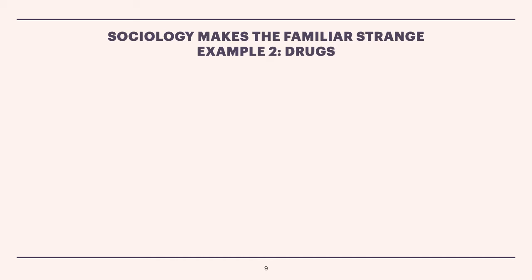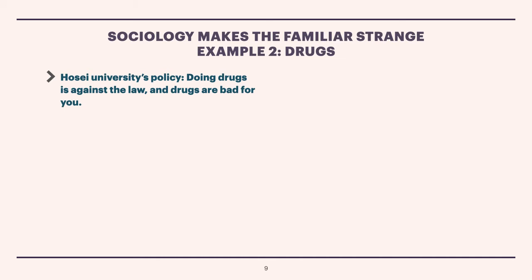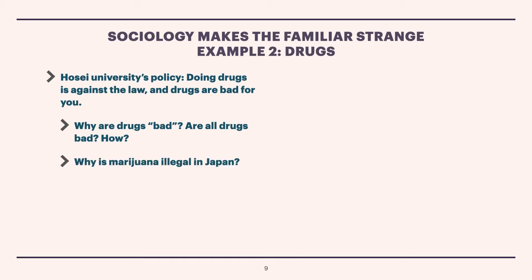Let's look at a second example. Let's move from killing to drugs. You must have received a lot of materials from the university, and you should be aware of the university's policy about drugs. Basically, the university's policy is that doing drugs is against the law, and drugs are bad for you, and that is why you should avoid taking drugs or being involved with drugs. And sociologists would step back and ask these questions: why are drugs bad? Are all drugs bad? Specifically, marijuana has been in the news a whole lot. Why is marijuana illegal in Japan? As you know, it is legal in some countries in the world.